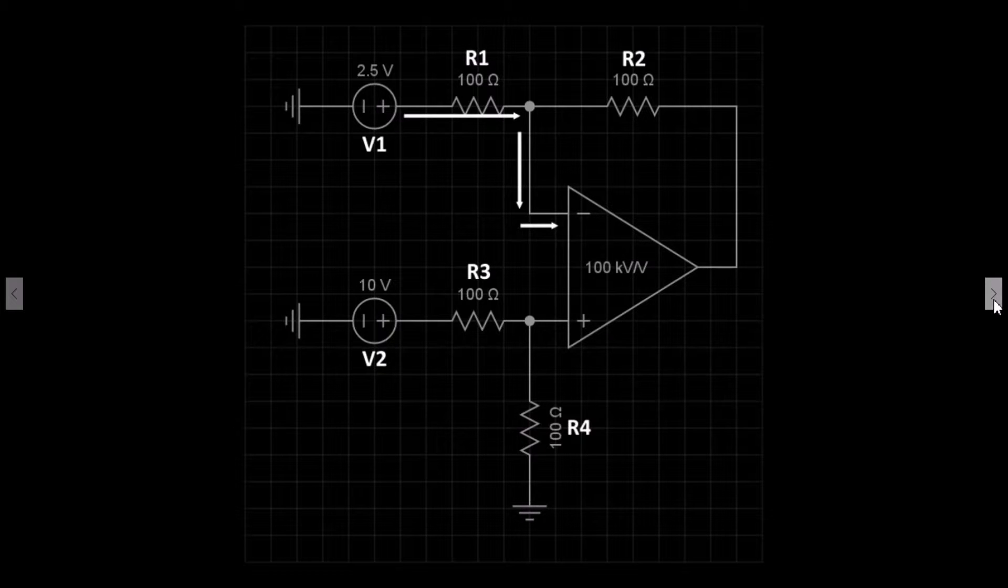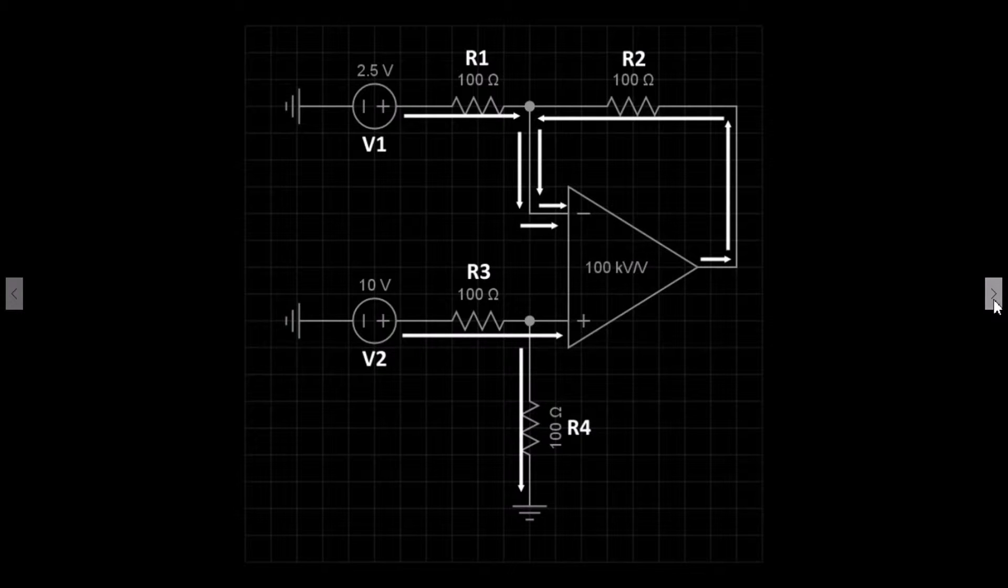The op amp output is connected through R2 then back to the inverting input to create a negative feedback loop. V2 feeds through R3 to the non-inverting input. R4 is connected between R3 and the non-inverting input and then connected to ground.